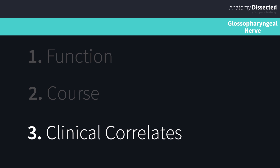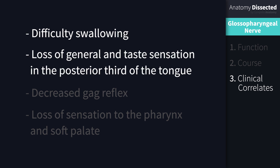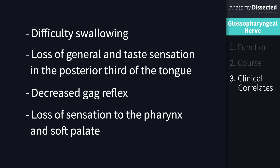Now let's explore some of the clinical correlates associated with this nerve. If damaged, the Glossopharyngeal nerve presents with a variety of symptoms, which may include difficulty swallowing, loss of general and taste sensation in the posterior third of the tongue, decreased gag reflex, and loss of sensation to the pharynx and soft palate. This is most commonly caused by strokes, basal skull fractures, and tumors.